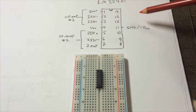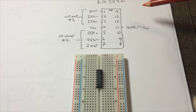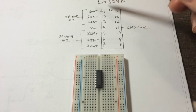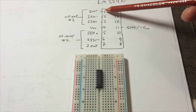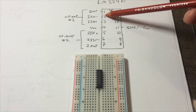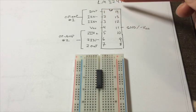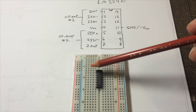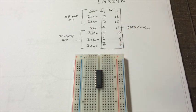Notice that it is a quad op-amp, meaning that there are four different op-amps on one single chip. So on the left-hand side starting at 1, we have the first three pins for the first op-amp. Always remember that the notch here is the top for the chip.